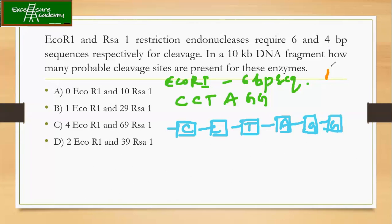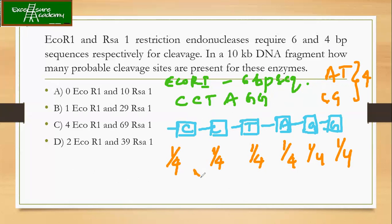Now what is the probability of C coming in this particular site? Among all the four bases, what is the probability of occurring of C? It will be one by four. Again, C is one by four. Similarly, the probability of T is one by four. Similarly A and G. All these nucleotide bases have the probability of occurrence as one by four. Now if C, C, T, A, G, G has to come together, what will be the probability? You need to multiply these.